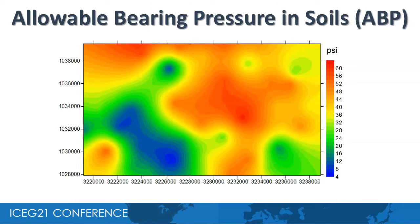Finally, using the previously computed parameters, we derive a range of geotechnical and earthquake engineering parameters that are useful in site characterization. Allowable bearing pressure is the maximum average contact pressure between the foundation and the soil; it should not produce shear failure in the soil. The color map of allowable bearing pressure for the study area indicates that the zones highlighted with red color are suitable for civil engineering works.